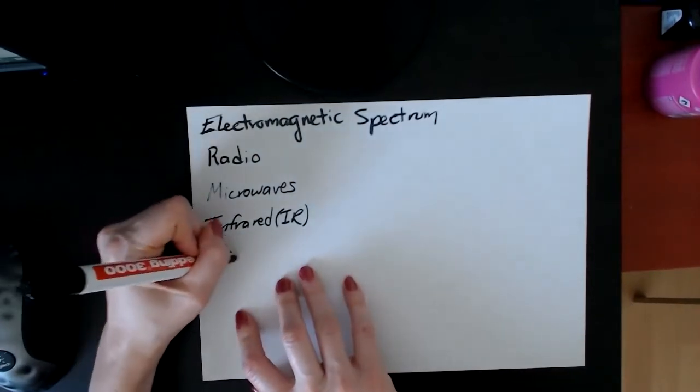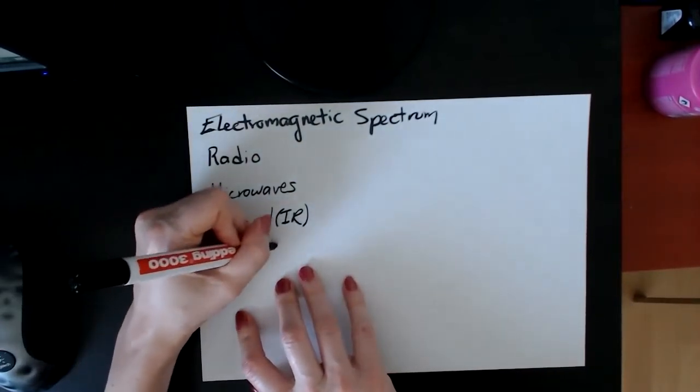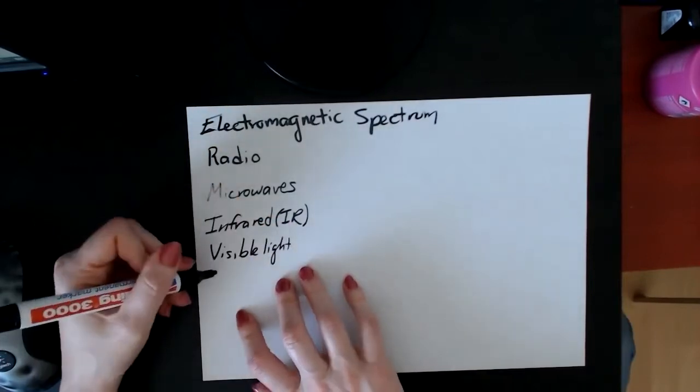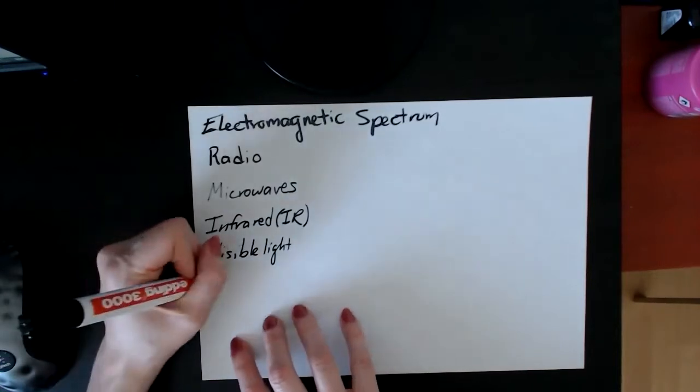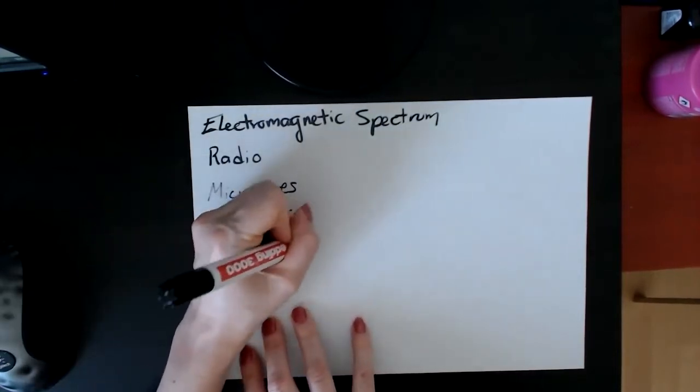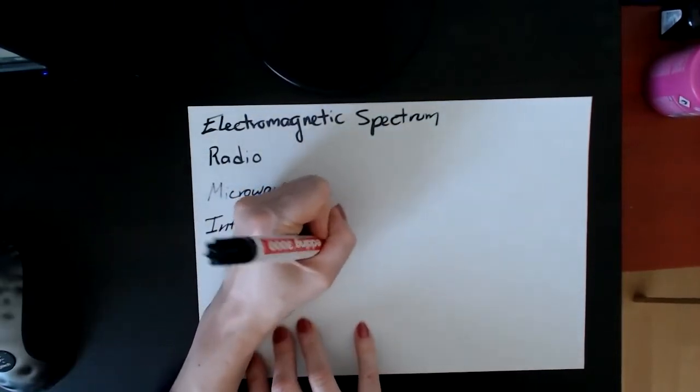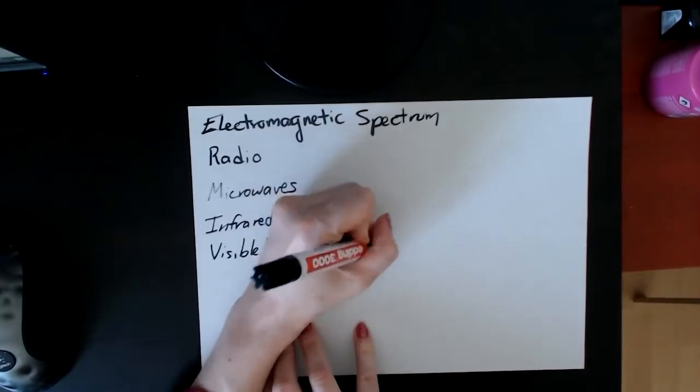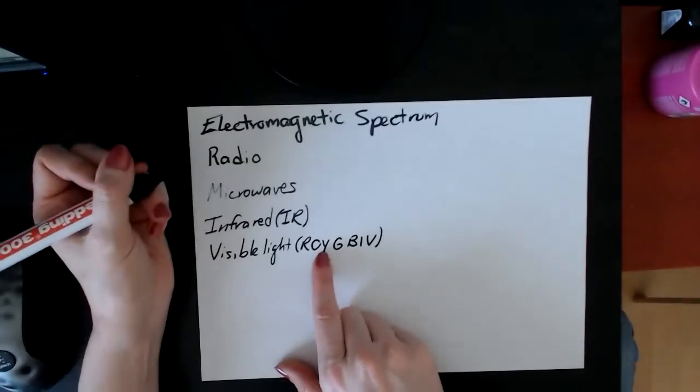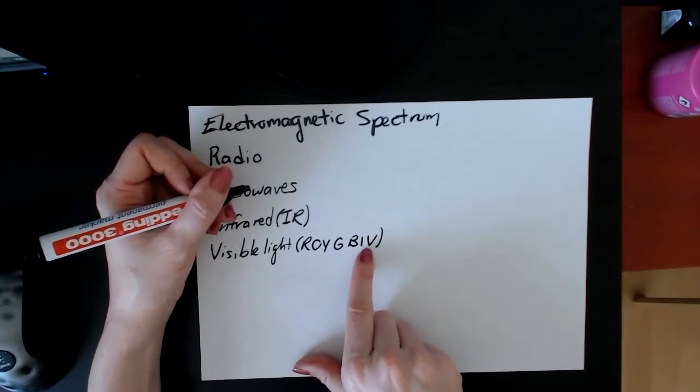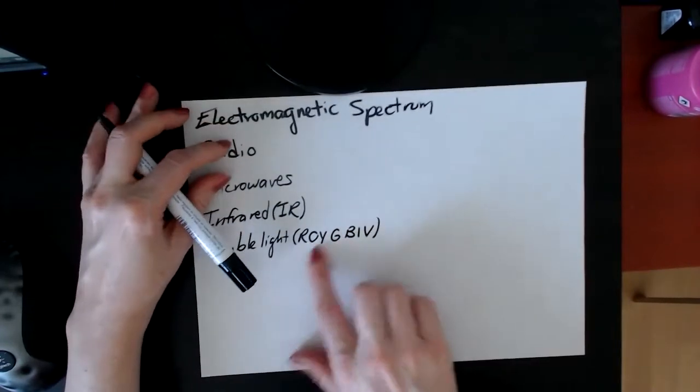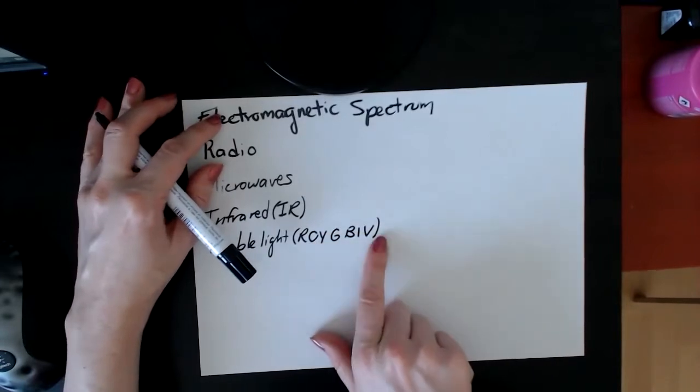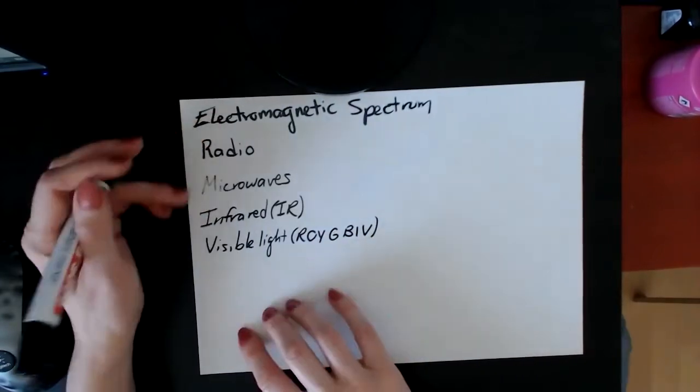Then you have visible light. And for visible light, you need to know the order of the colors in which they go. The way you remember that, in English at least, is ROYGBIV: red, orange, yellow, green, blue, indigo, violet. That is your rainbow, basically. If you think about on a rainy day, if you see a rainbow, those are the colors you're seeing, and they're in that order. You need to make sure you know that order.